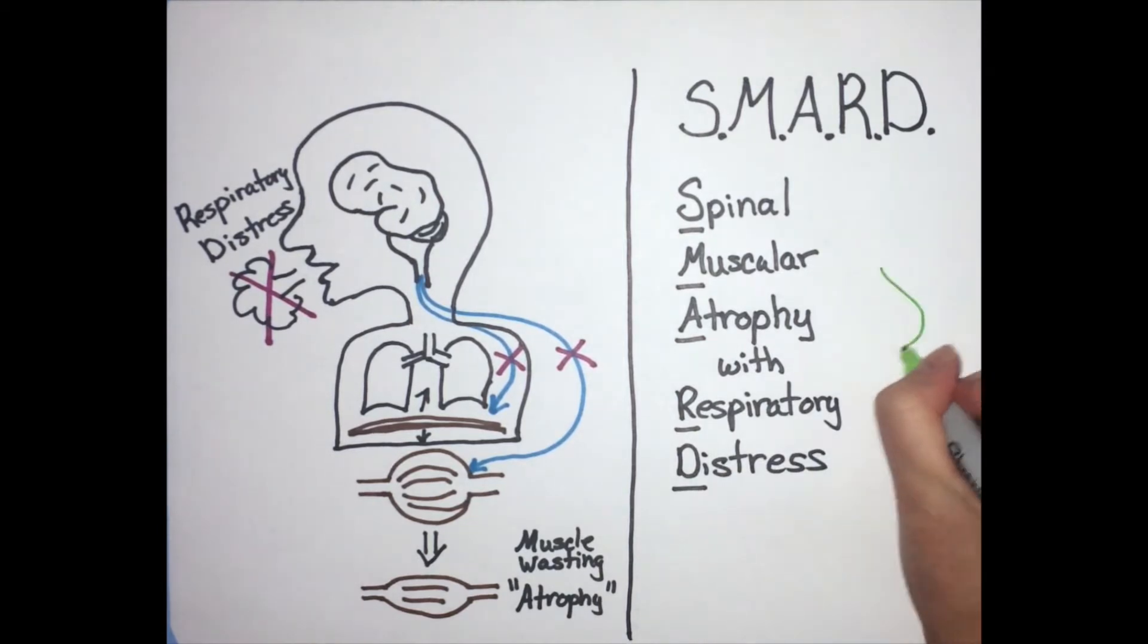SMARD typically occurs in children six weeks to six months of age and it is all caused by changes in a single piece of DNA.